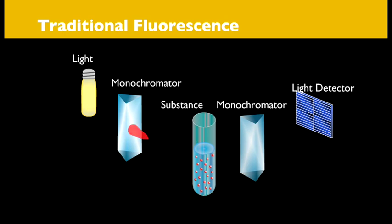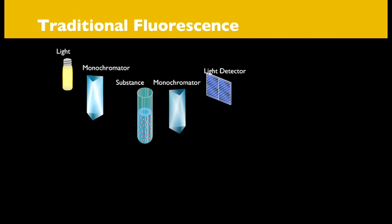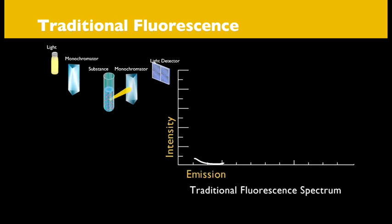Traditionally, light was filtered so that one specific wavelength of that light is focused into a sample. This is called excitation. As the molecules are exposed to the excitation light, they emit different wavelengths of light. The resulting emitted light and the intensity of each wavelength is measured by a light sensor and then recorded as a line graph with emission wavelength versus intensity.